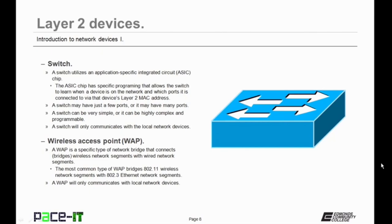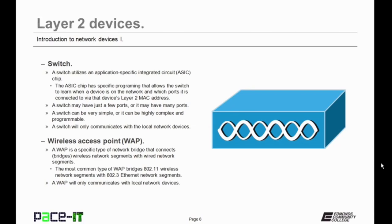Although a switch is smarter than a hub, it can still be very simple, or it can be highly complex and programmable. A switch can only communicate with local network devices. Another Layer 2 device is the wireless access point, or WAP. A WAP is a specific type of network bridge that connects or bridges wireless network segments with wired network segments. Just like a switch, a wireless access point will only communicate with local network devices.